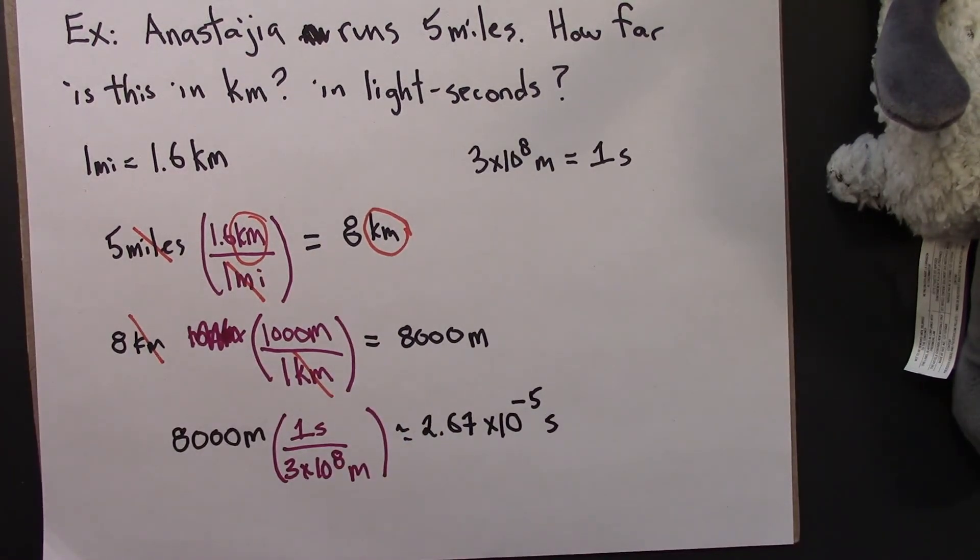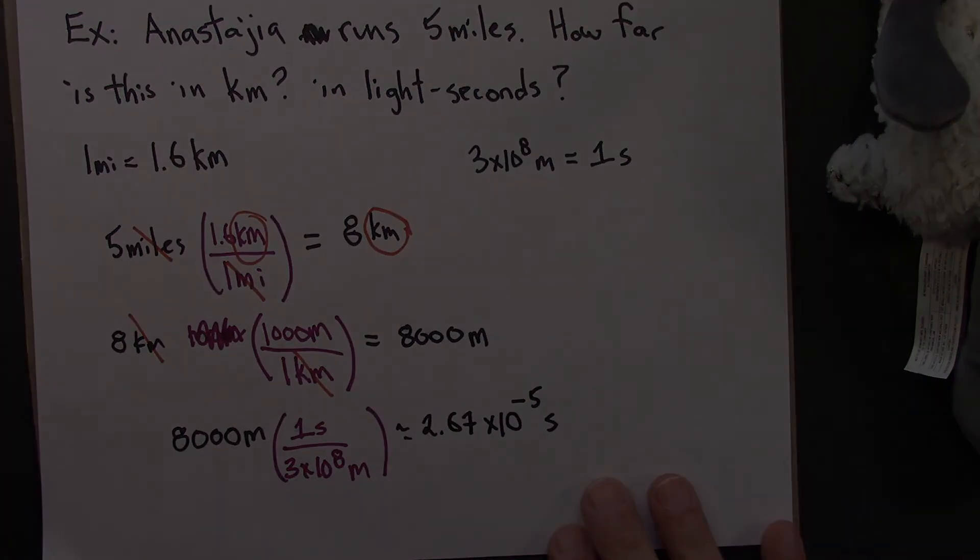So what this means is, 5 miles is 8 kilometers, is equal to the distance light travels in this tiny amount of seconds.